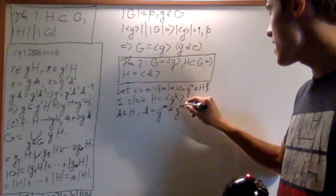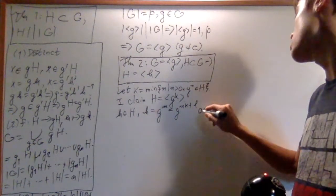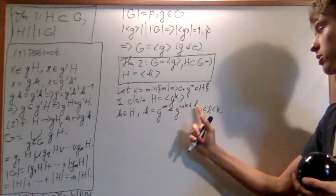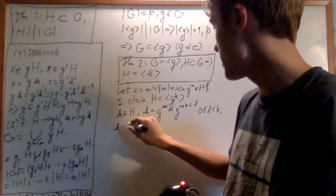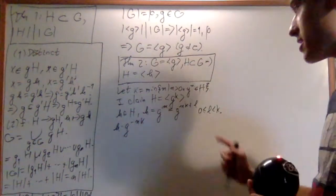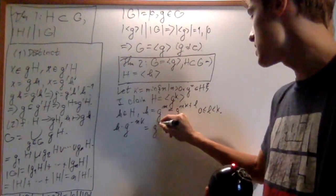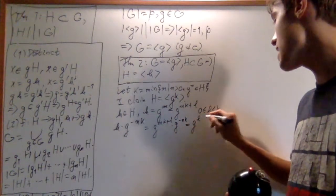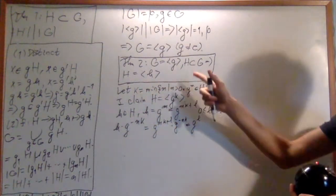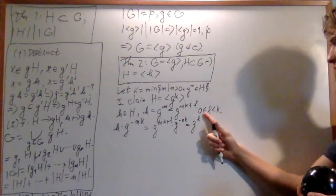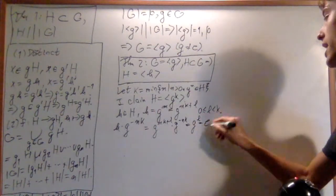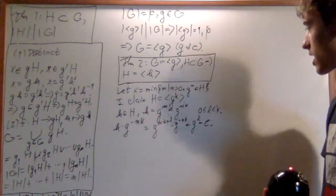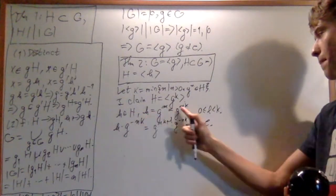m can be represented as nk + l for l between 0 and k — this is modular arithmetic, m is congruent to l mod k. Now multiply by g to the minus nk. This is going to be an element of H, and it equals g to the nk+l times g to the minus nk, which is just g to the l. Since g to the k is the smallest power of g in H and l is between 0 and k, l must be 0, meaning h is generated by g to the k. Every h in H is a power of g to the k, so H is cyclic.